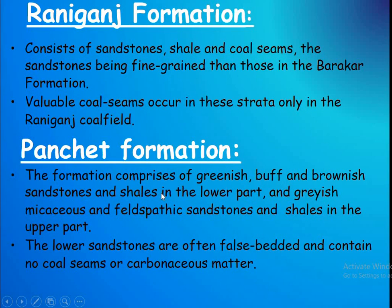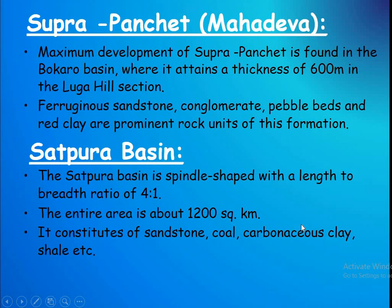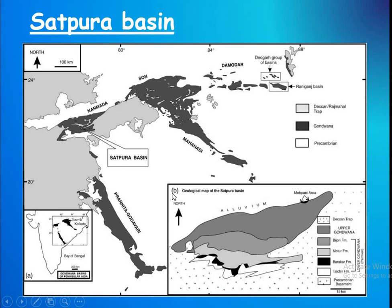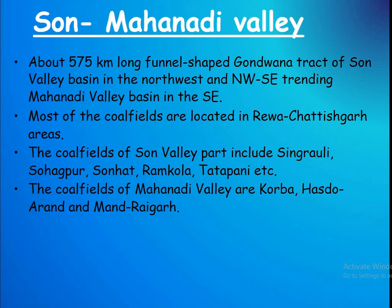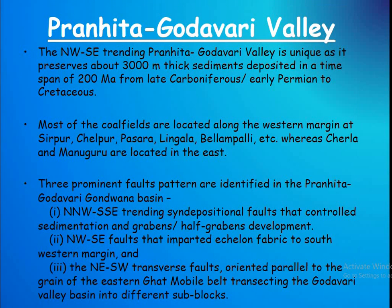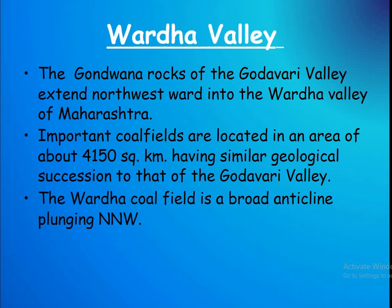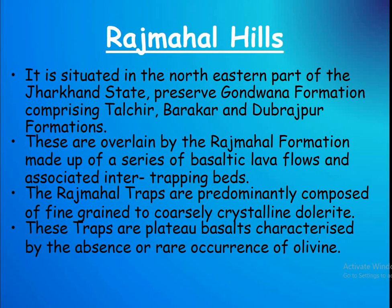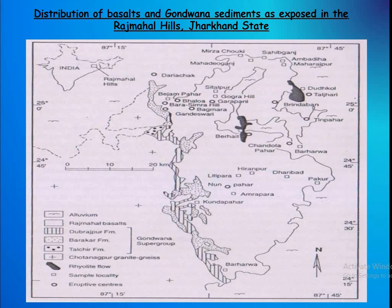Panchet Formation. This is comprised of greenish, brownish sandstone and shale in the lower part, and grey micaceous shale with sandstone and shale in the upper part. Sukhura–Panchet or Mahadeva Formation and the Sapkura Basin in Central India: Son–Mahanadi Valleys, Pranhita–Godavari Valleys, Wardha Valley, and Rajmahal Hills. Distribution of basalt and Gondwana sediment; extrusive rocks occur in the Rajmahal Hills of Tidarkhandi Strait.